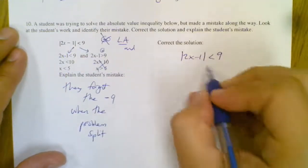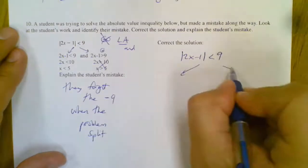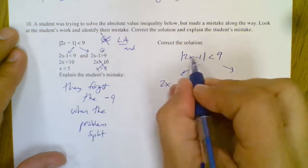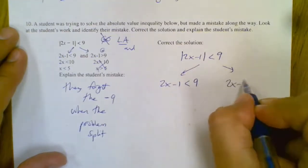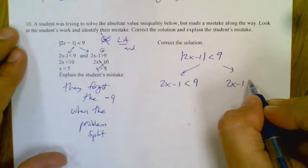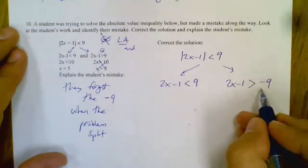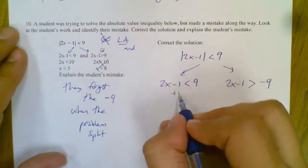Recognizing mistakes is a good thing. So since it's isolated, I'm going to write it once with just the absolute value signs, and the other time I'm going to not only flip my symbol, I'm also going to flip the sign of what's over there. That's what they forgot. And then we go ahead and solve it.